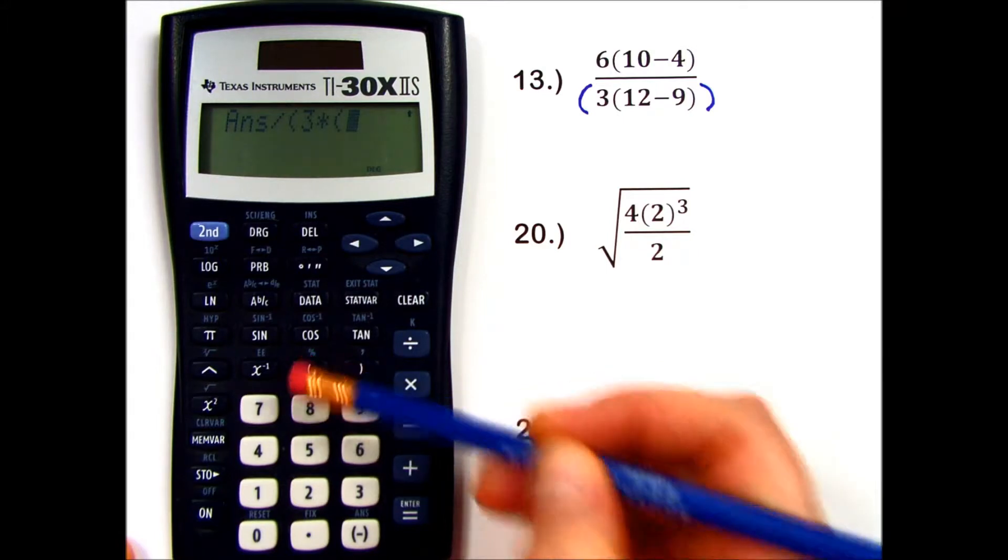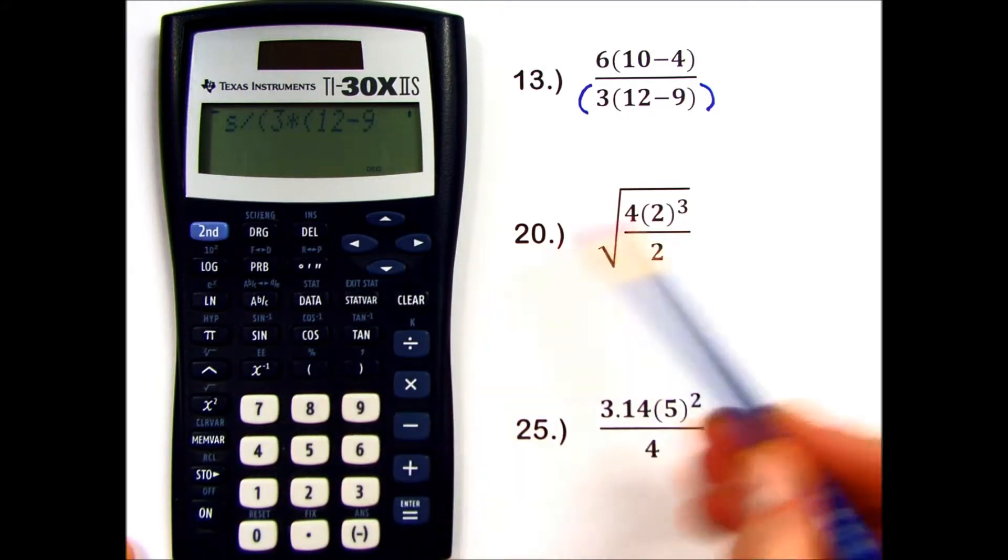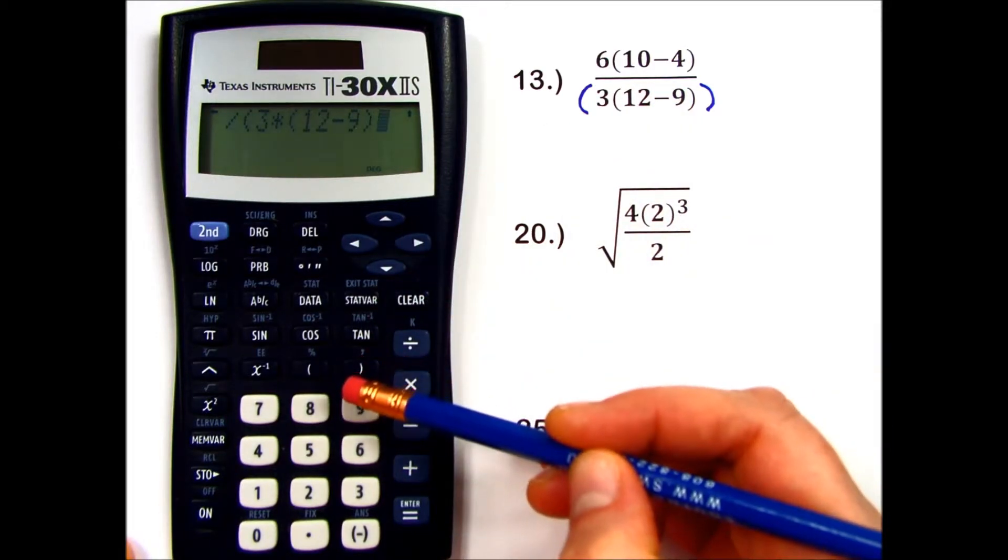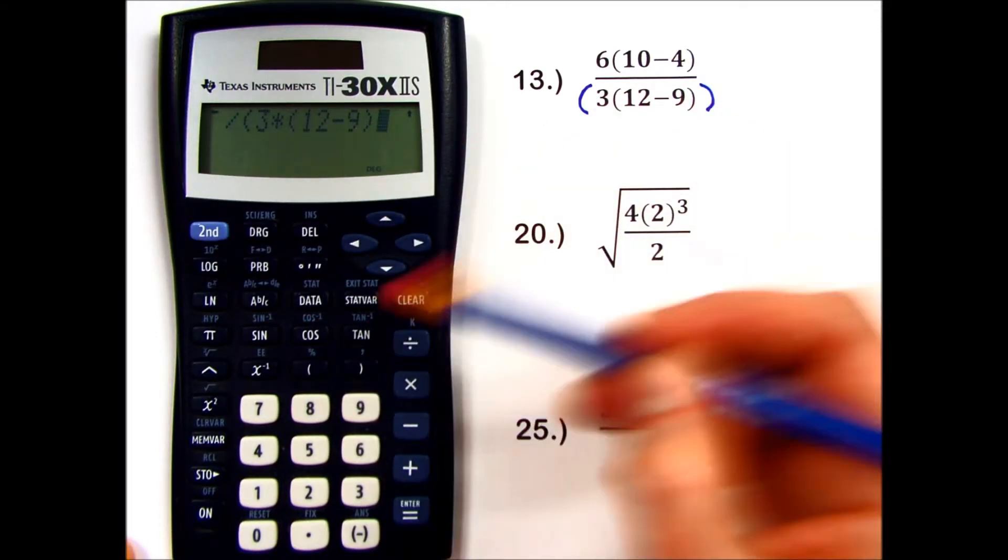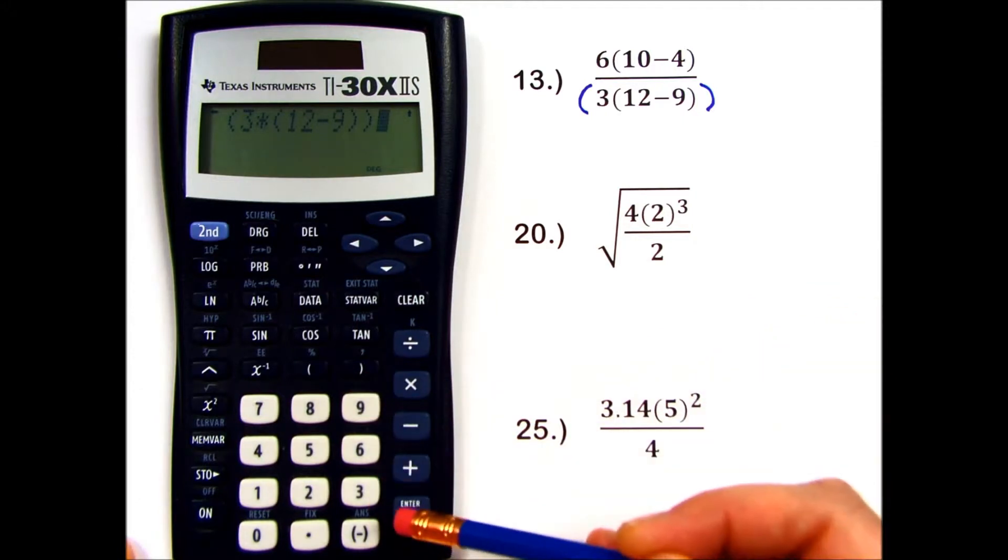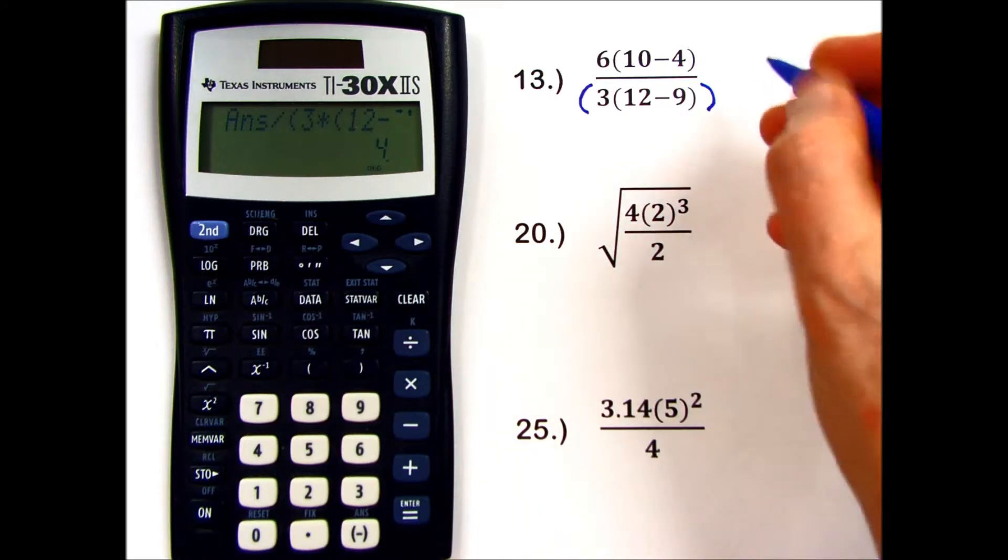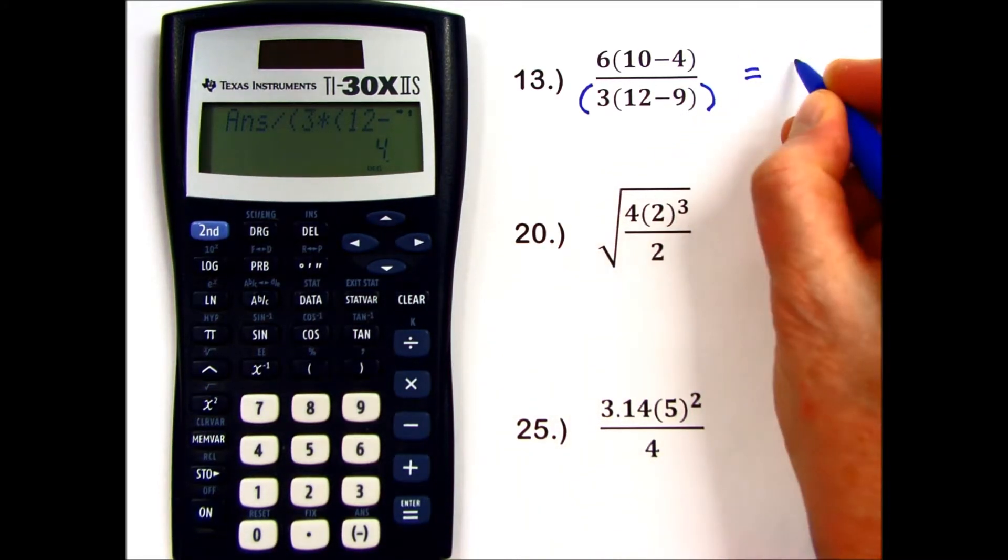parentheses 12 minus 9. When I close these innermost parentheses, and then I close the outermost, and press equals. My final answer, numerator divided by the entire denominator, is 4.